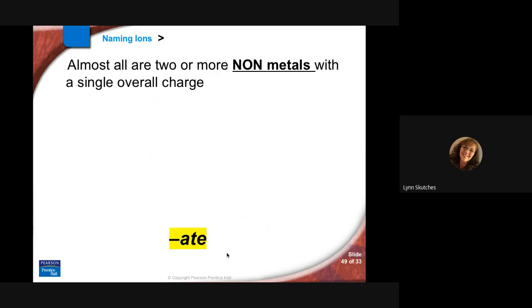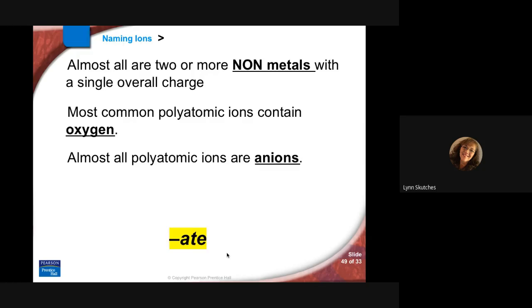A couple things about polyatomics: they're almost all two non-metals, sometimes more than two, and very occasionally there's a metal in a couple of them that we won't cover. Altogether, multiple atoms stuck together with a single charge. All of the common ones or almost all have oxygen as part of their little cluster of atoms, and all but two are anions. There's two cations, ammonium and hydronium, and the only one we really have to worry about is ammonium.